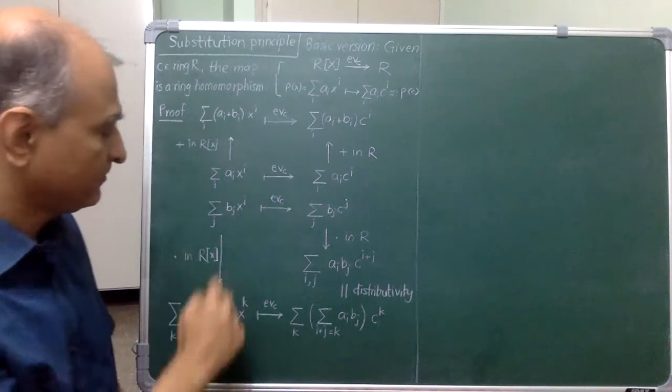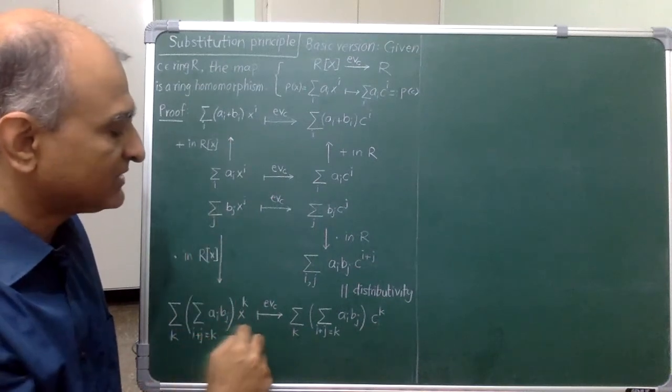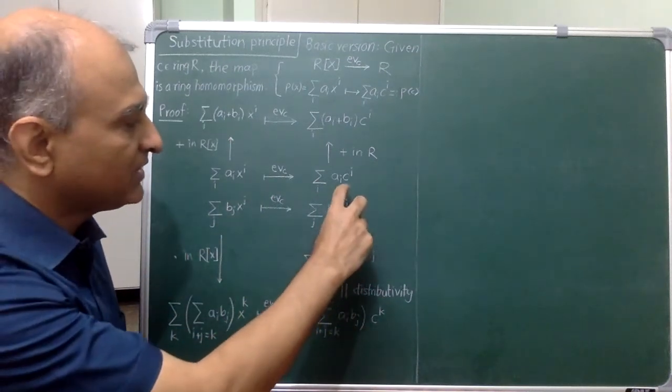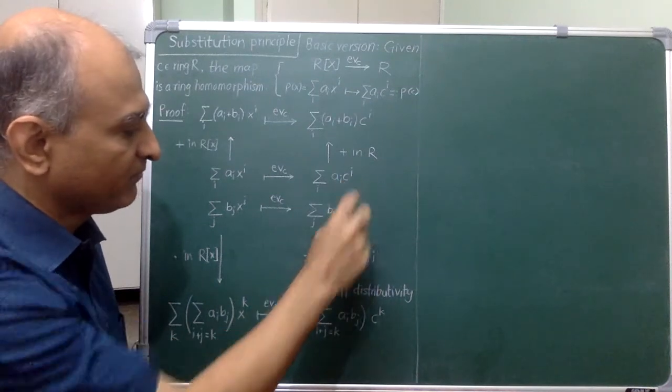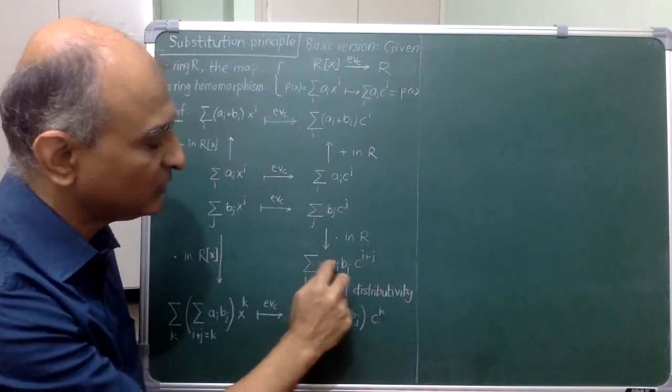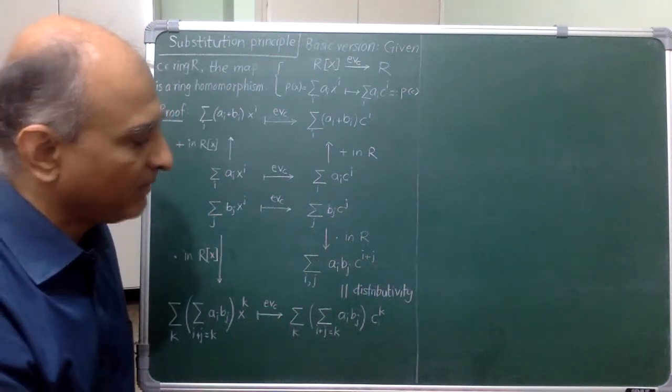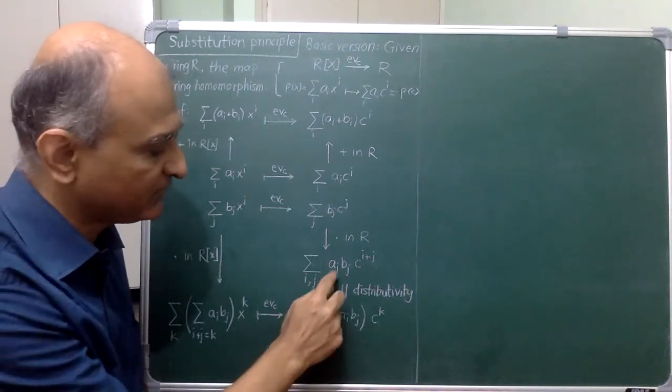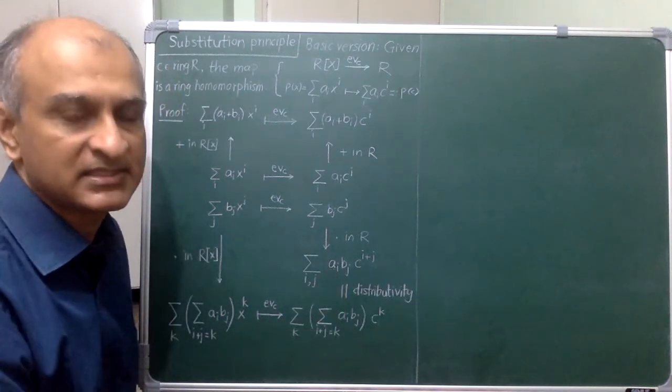For multiplication, multiplying the polynomials and evaluating gives me this result. If I multiply both of these expressions, then using distributivity, I first get something that looks a little different but collecting like powers in C and again using distributivity, it shows that both of these results are exactly the same.